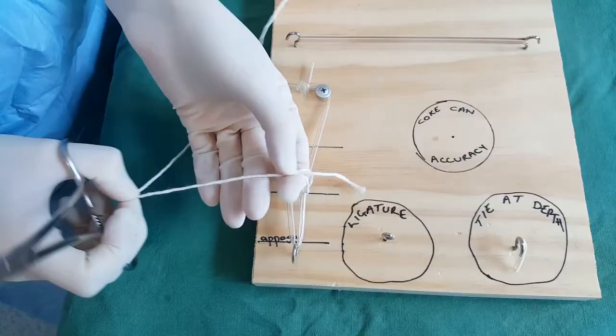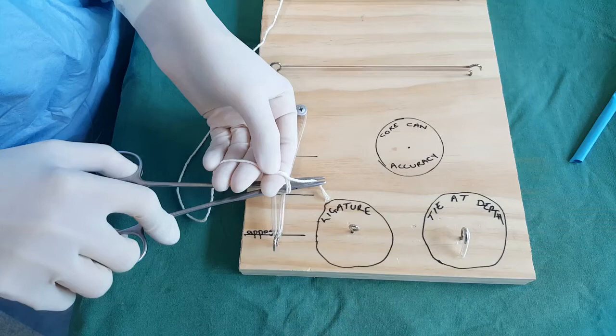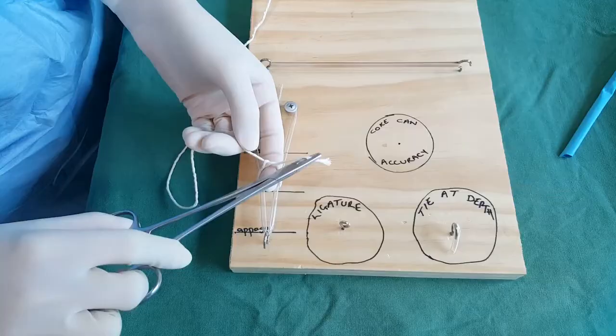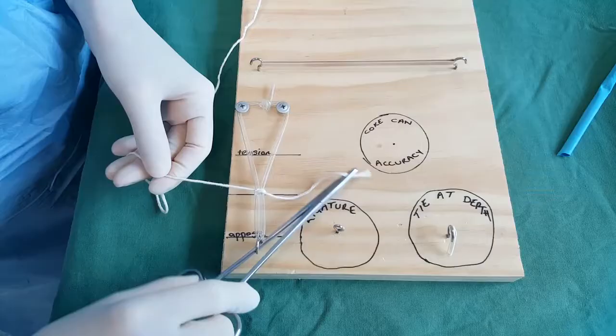Hold all the suture material at the top there together. Take your needle drivers through the loop, grab the short end, bring the short end through the loop so it's now underneath, and you can tie that down.